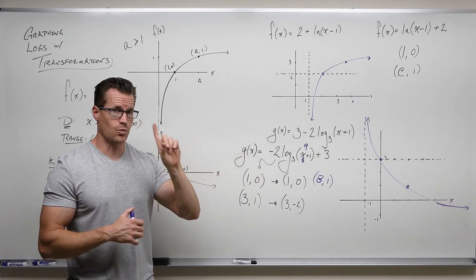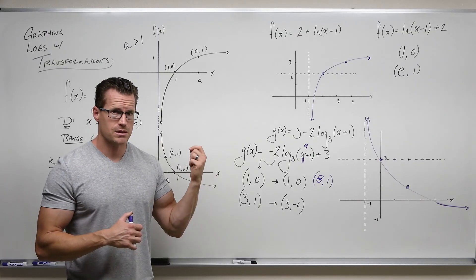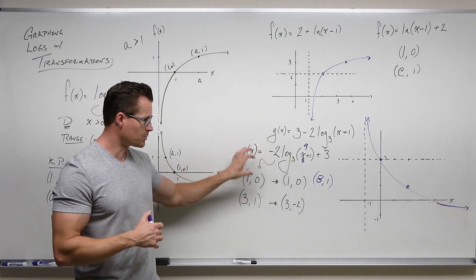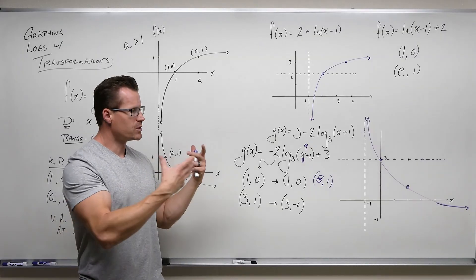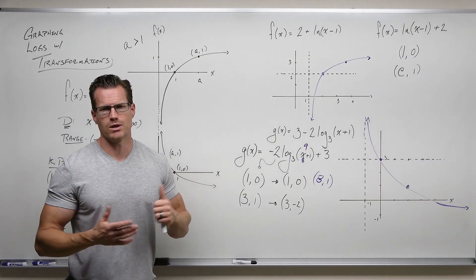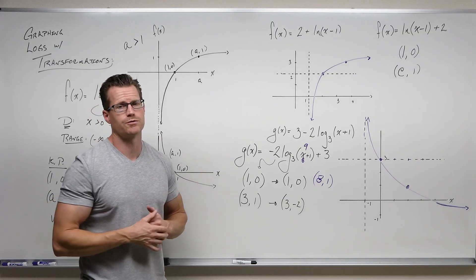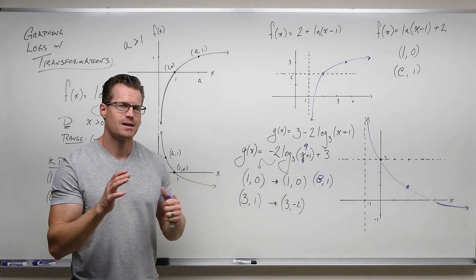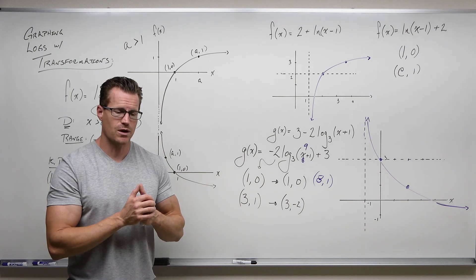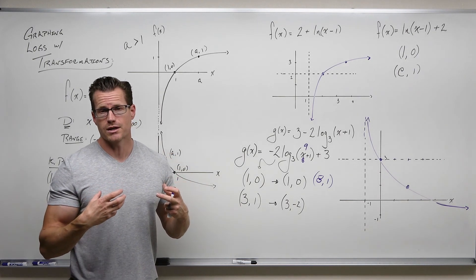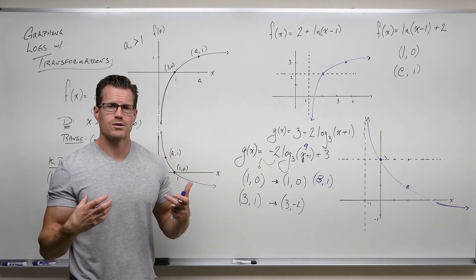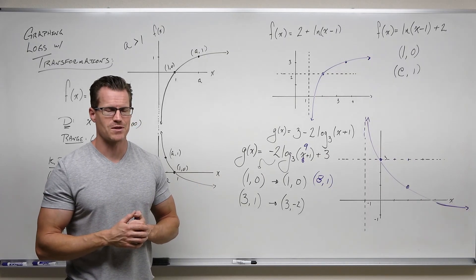You should be thinking through what the graph does, identify your key points as 1, 0, and the base, 1, and then multiply if you need to multiply the outputs. Then we do our shifting, we put our key points, and we graph it along with our vertical asymptote for logarithms, or horizontal for exponentials. I hope it makes sense, get some practice in on that, and I'll see you for another video when we start solving exponentials with logarithms and solving logarithms with exponentials.